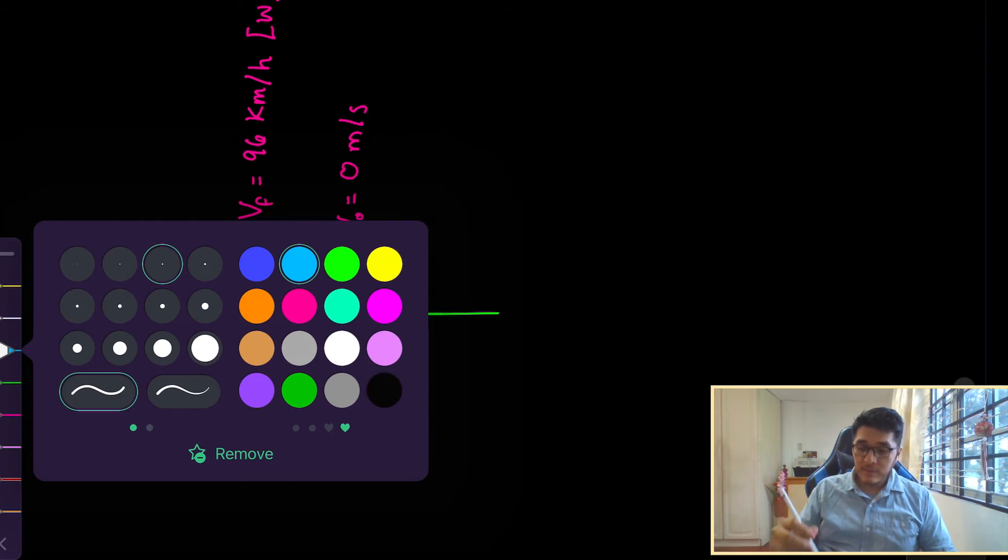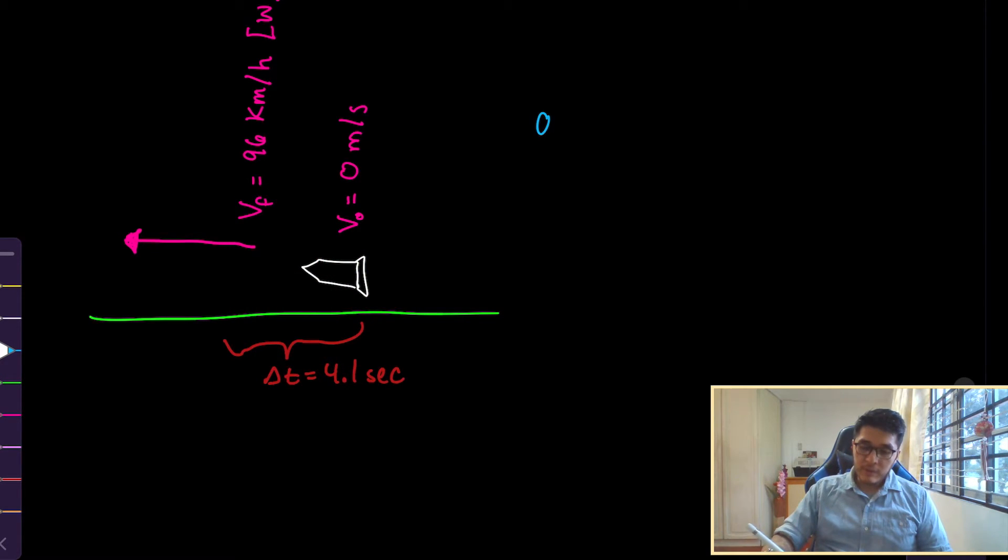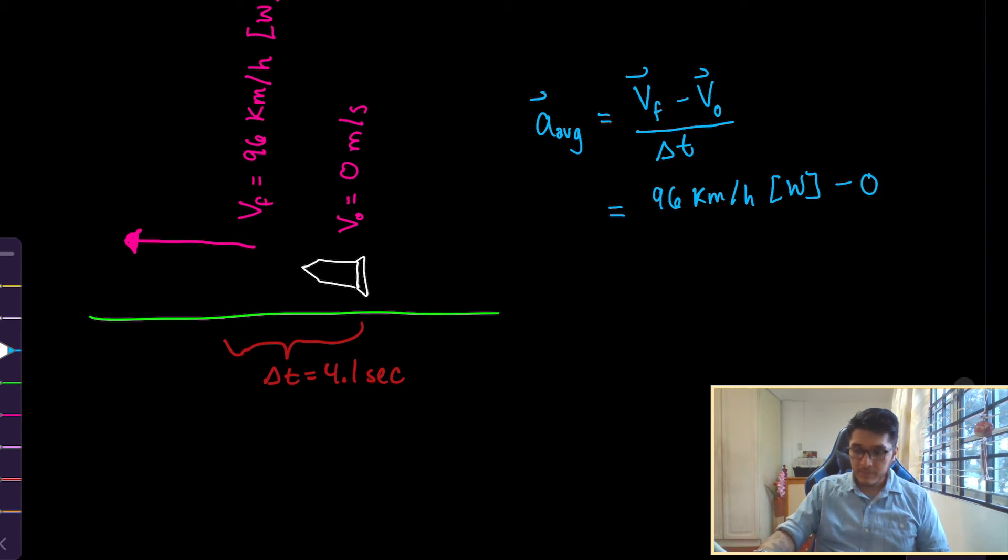So let's put this information together into the formula. So our average acceleration is going to be V final minus V initial divided by our change in time. Our final velocity is 96 kilometers per hour west. Our initial velocity is 0. And our change in time, it took 4.1 seconds. So before you get too excited, I notice that I actually have the wrong units. Because I need to first convert into SI. So I got to put the kilometers per hour into meters per second.